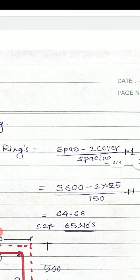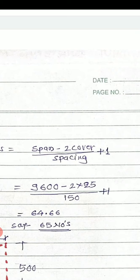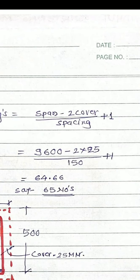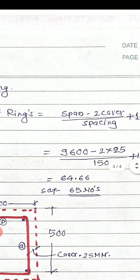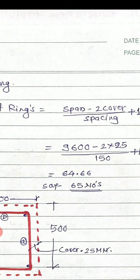Now for stirrups or rings, the number of rings is equal to span minus 2 cover divided by spacing, plus 1, where spacing is 150 mm center to center. So the calculation is: 9600 minus 2 into 25 divided by 150, plus 1, which equals 64.66. Since 0.66 of a ring is required, we round up to 65 numbers.